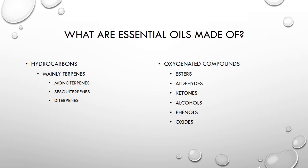Essential oils are mainly made up of hydrocarbons, and these specific hydrocarbons are called terpenes. The three different types of terpenes found in essential oils are monoterpenes, sesquiterpenes, and diterpenes. The second component that makes up essential oils is oxygen compounds, which include esters, aldehydes, ketones, alcohols, phenols, and oxides. Hydrocarbons are simply carbon and hydrogen atoms bonded together, while oxygenated compounds contain at least one oxygen atom.